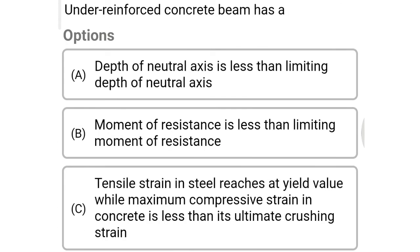Next question: an under reinforced concrete beam has option A depth of neutral axis less than the limiting depth of neutral axis, option B moment of resistance less than the limiting moment of resistance, option C strain in steel reaches yield value while maximum compressive strain in concrete is less than its ultimate crushing strain, option D all of the above. The correct answer is option D: all of the above.